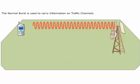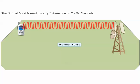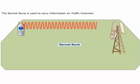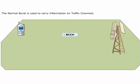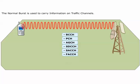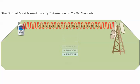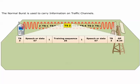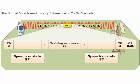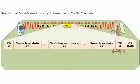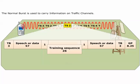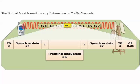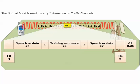The normal burst is used to carry information on traffic channels and control channels: BCCH, PCH, AGCH, SDCCH, SACCH, and FACCH. A normal burst consists of two 57-bit packets of encrypted data or speech, two flag bits, a 26-bit training sequence, and two 3-bit packets called tail bits.